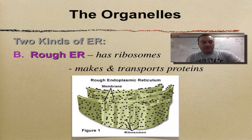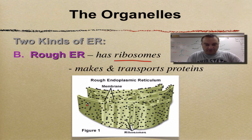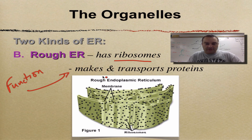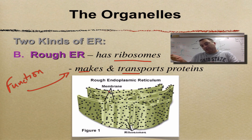Rough ER is the second kind, and it gets its name from the fact that it has ribosomes. You can see all these ribosomes studded upon it — it gives it a rough or bumpy texture. Its function: it makes and transports proteins. All those ribosomes make proteins, the products go into the channels and move to where they need to go — like your classroom being a ribosome, making proteins that travel out the hallway.